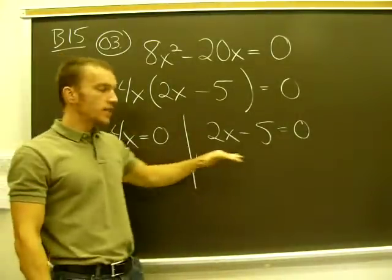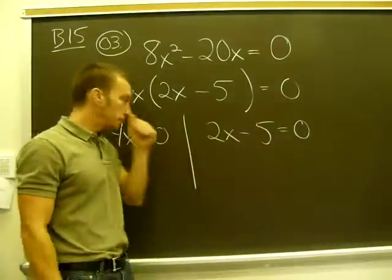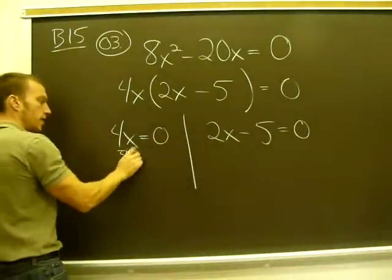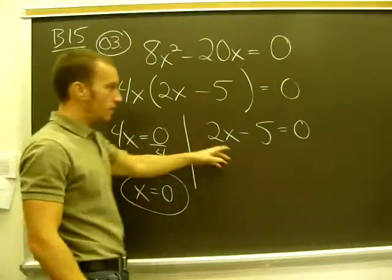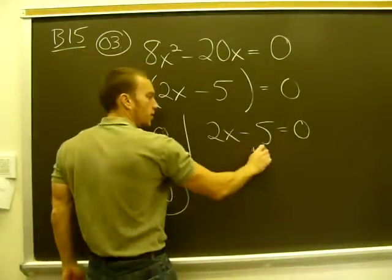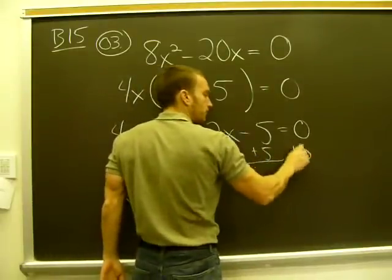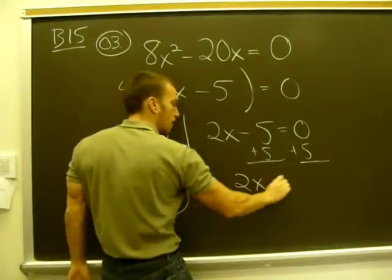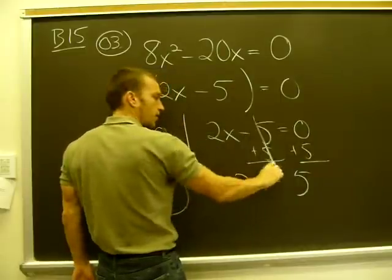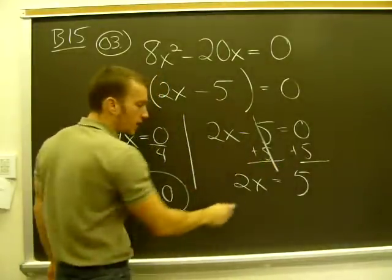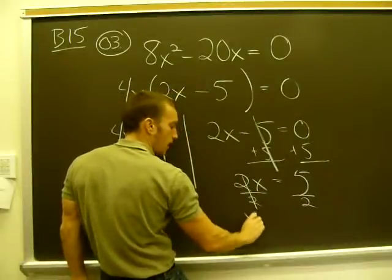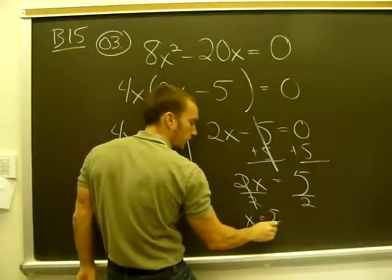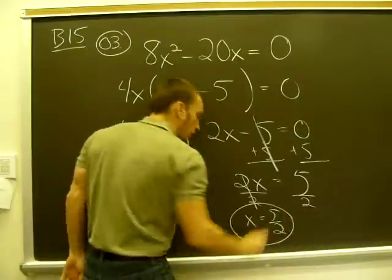So I solve each of these linear equations and then I'm done. If 4x equals zero, then x has to be zero. That's one solution. If 2x minus 5 equals zero, for my algebra, first add 5 to both sides. That goes away and then 2x equals 5. Then divide by 2. And I have x equal to 5 over 2.